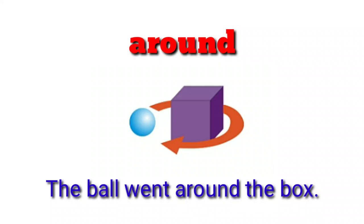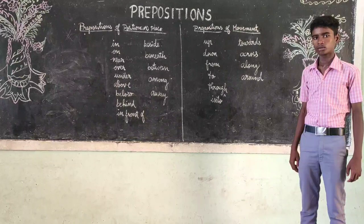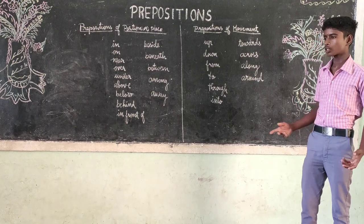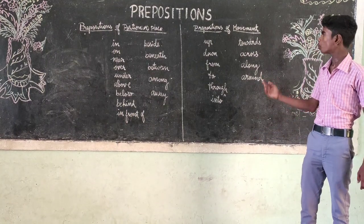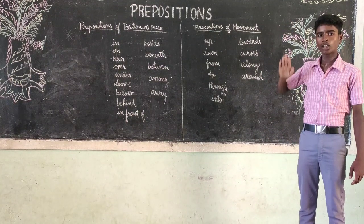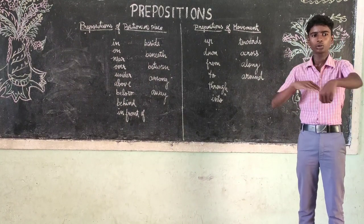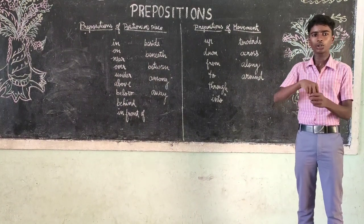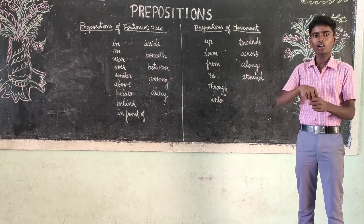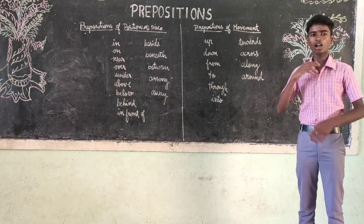Prepositions of movement: up, down, from, to, through, into, towards, across, along, around.